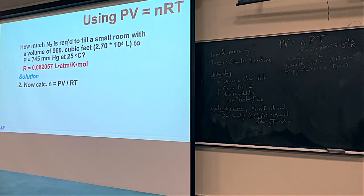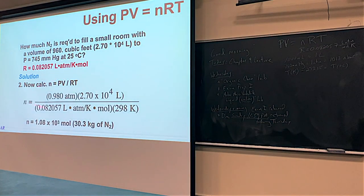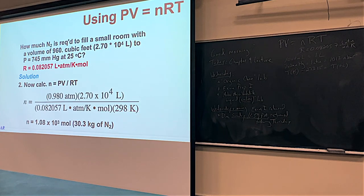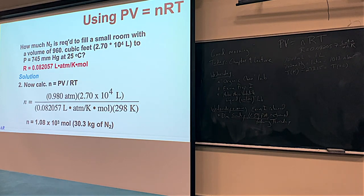N equals PV over RT. Plugging in the values: pressure = 0.980 atm, volume = 2.70 × 10⁴ L, R = 0.082057, temperature = 298 K. Looking at significant figures — 0.980 is 3 sig figs, 2.70 × 10⁴ is 3 sig figs, 298 is 3 sig figs, and R has 5 sig figs. So the answer is cut off at 3 sig figs: 1.08 × 10³ moles.